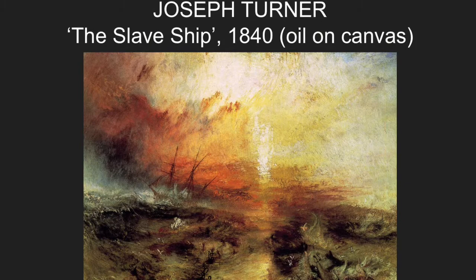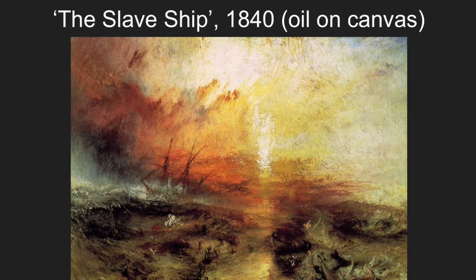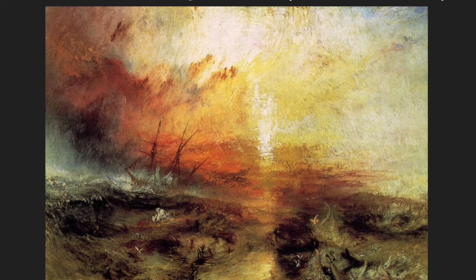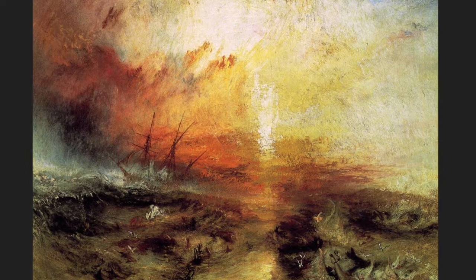Here's another one by Joseph Turner called The Slave Ship. This one has dark yellows and oranges and then contrasts with dark blacks and grays at the bottom. What kind of emotion does this make you feel? Maybe anxious, or angry, or nervous. That kind of clashing of colors is abrupt and you're not sure exactly how to feel.